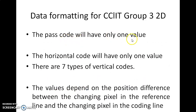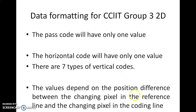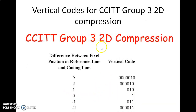The pass code has only one value. Similarly, the horizontal code has only one value. There are 7 types of vertical codes. The values depend on the position difference between the changing pixels in the reference line and the changing pixels in the encoding line. This difference determines the values and the changing pixels.